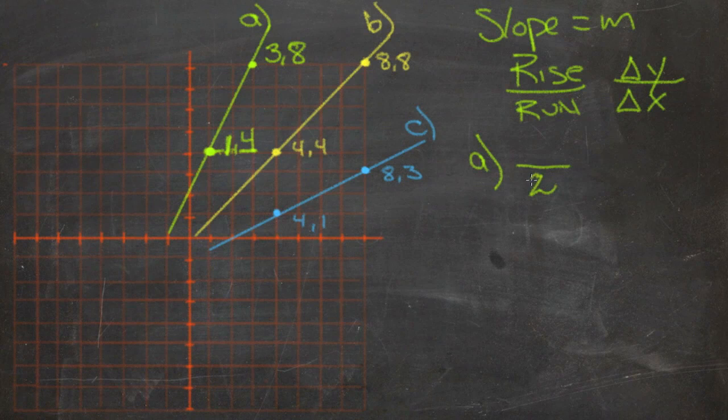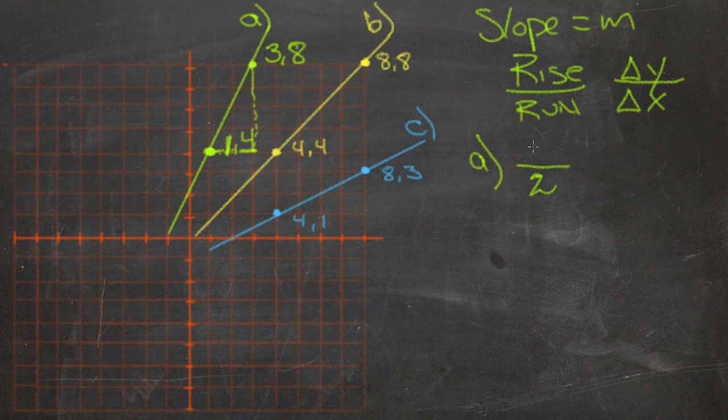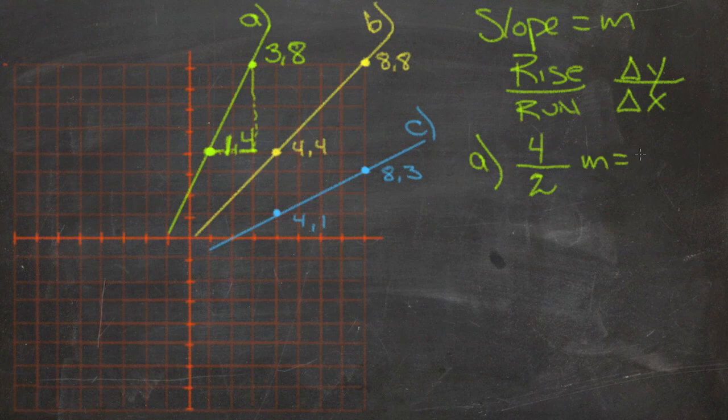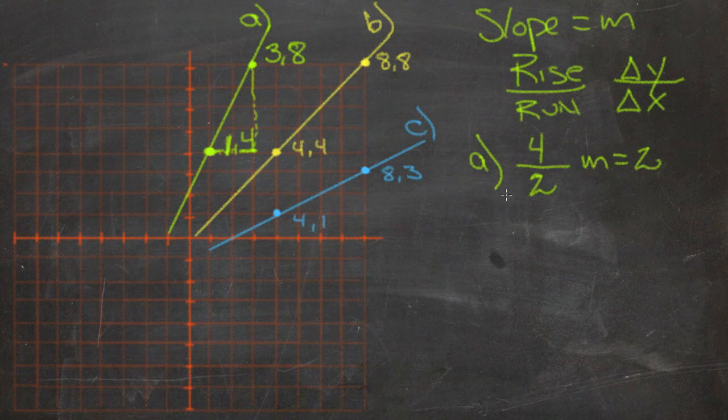And our change in y is 4 up to 8, so our change in y is 4. We reduce that, and we get an M of 2. 4 divided by 2 is 2.